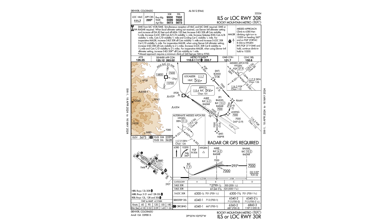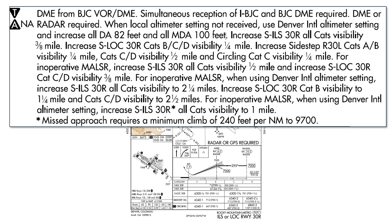This is the ILS, or localizer, approach into runway 30R at Rocky Mountain Metro in Denver. It's one of the more commonly used approaches into this airport, but even if you've shot this approach once or twice, there are so many details to this approach that you might not have familiarized yourself with everything. Let's dive into some of the finer points here, beginning with this notes section, which is intimidating. We'll take it one point at a time.